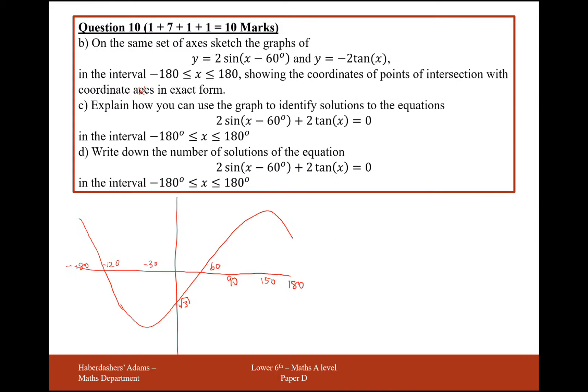And the -2tan graph, so we'll have asymptotes at -90 and 90. It's going to come down here, intersect at that point there, and go down. And it's going to come down from the -180, it's going to come from the top down, intersect at the -180 there. Okay, there we are. So this graph here is the sine one, so 2sin(x - 60°), and the tan one here is going to be -2tan(x).